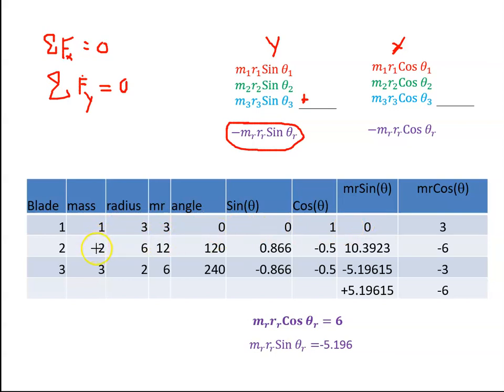For blade two, it's two by six, which is 12, at 120 degrees. So sine of 120 multiplied by 12 gives me 10.3923. So I do that for each one of the blades, and I get plus 5.19615 for the y values and minus six for the x values.